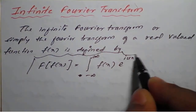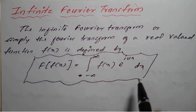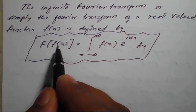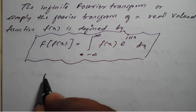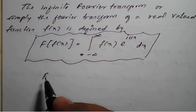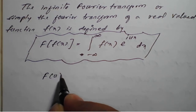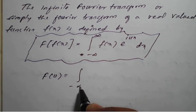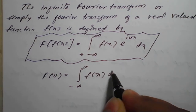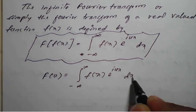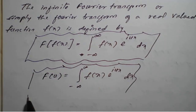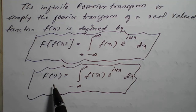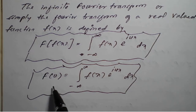So this is the infinite Fourier transform, which may also be called F of f of x. I will denote it as capital F of u, equal to the integration from minus infinity to plus infinity of f of x, e raised to i u x, into dx. This is the formula for the infinite Fourier transform, or simply the Fourier transform.